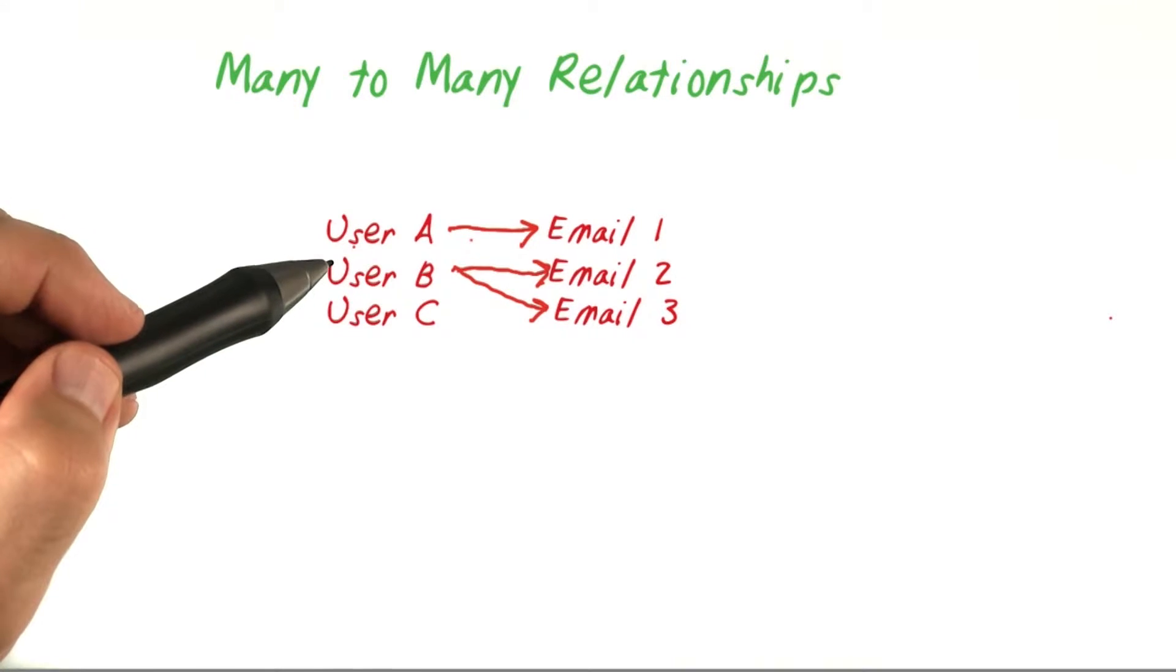If instead we'd allowed each user to have multiple email addresses, this would have been a one to many relationship because one user could contain many email addresses.